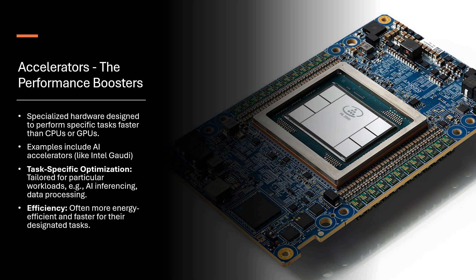And then comes the accelerator — called the performance booster. It is specialized hardware designed to perform specific tasks faster than both CPU and GPU. It is specific — tailored for particular workloads. Like Intel Gaudi, which is meant for AI acceleration tasks specifically for deep learning. They are tailored for particular workloads like AI inferencing, deep learning operations, and training. It is not a GPU; it is meant for specific AI workloads, making it even more efficient and energy efficient for the tasks it is designated for. Intel Gaudi 2 and Gaudi 3 are going to be fantastic options for running deep learning workloads.